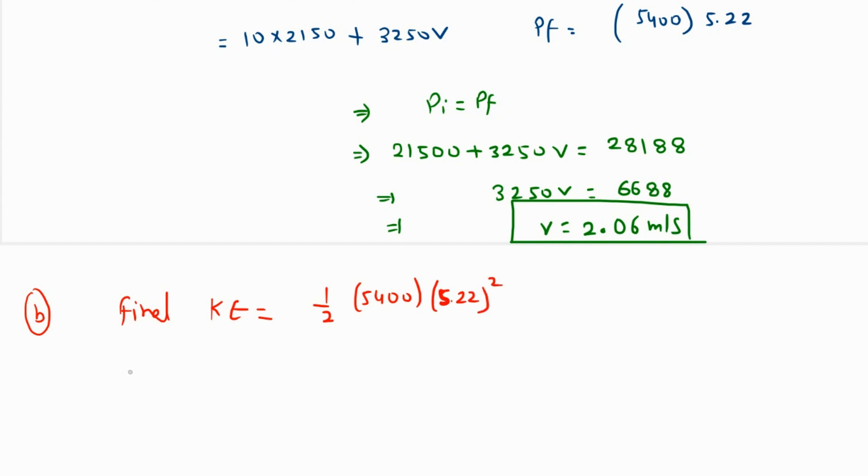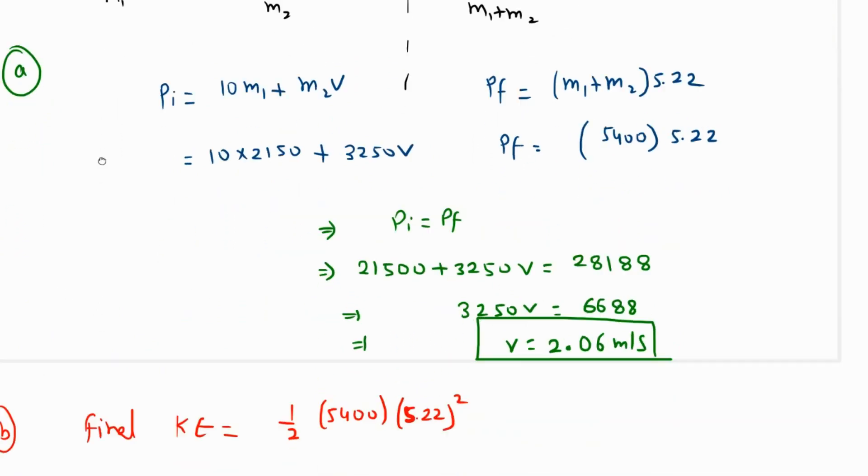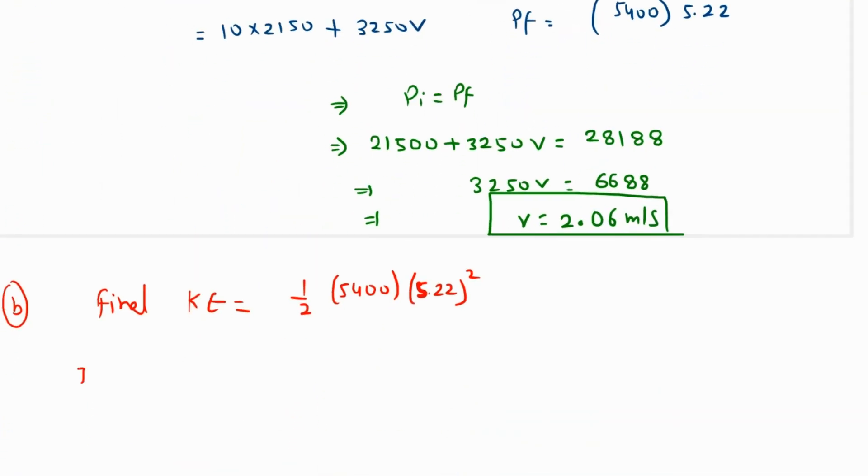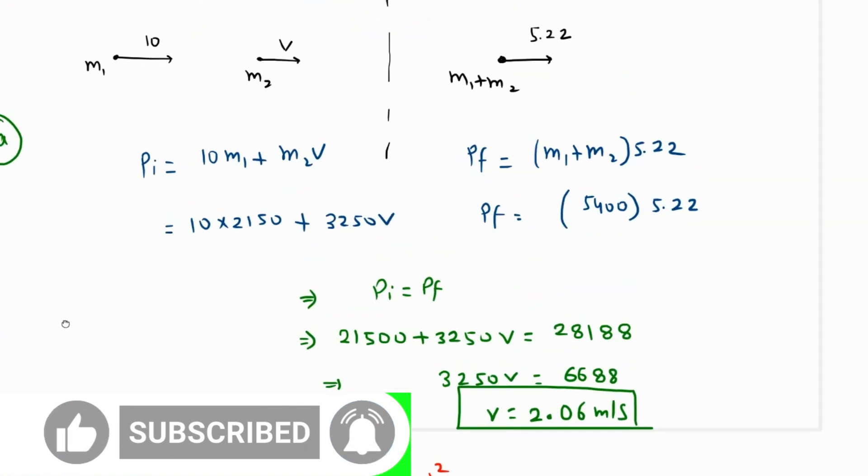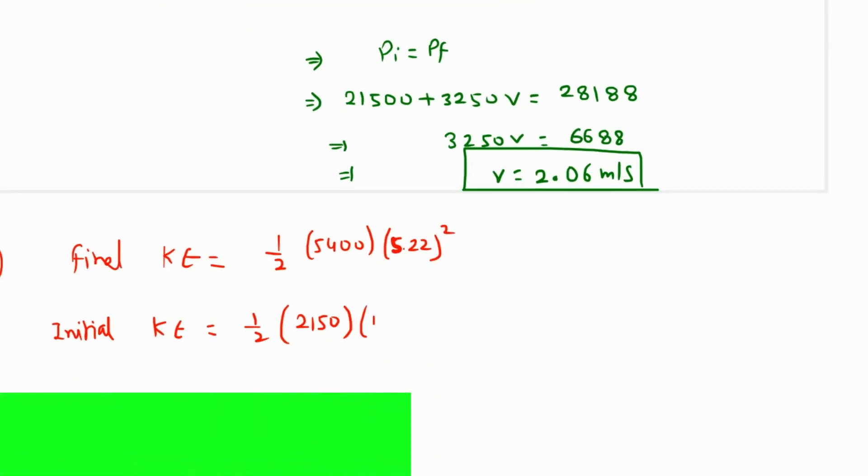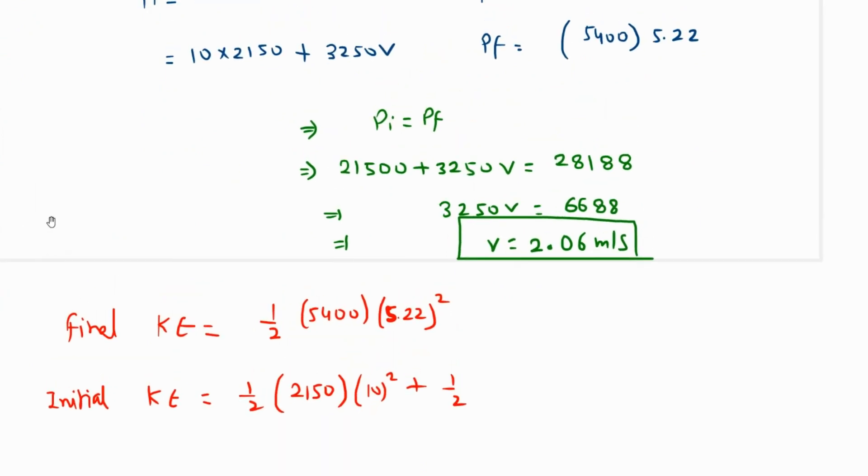And the initial kinetic energy is because of both individually. So initial kinetic energy is half the first mass which is 2150 times the speed 10 squared, plus half the mass of the other one which is 3250 times the velocity which we just found as 2.06 squared.